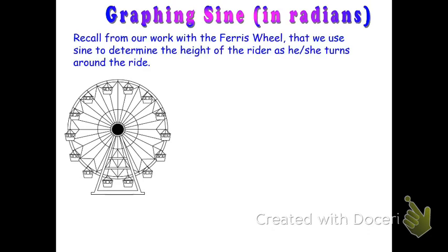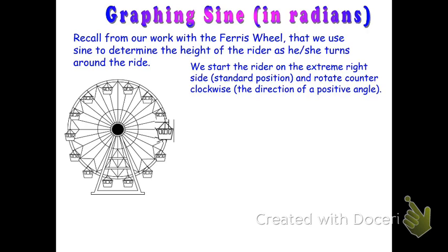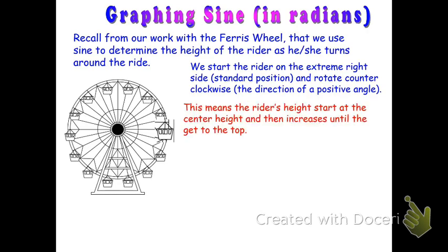Recall our work with the Ferris wheel — we always use sine to measure the height of the rider as he or she turns around the ride. If we start the rider on the extreme right-hand side position, this would be called the standard position, or the positive x-axis. They will then rotate in a counter-clockwise direction because that is a positive angle of revolution. If they start at the extreme right-hand side, their height would be the same as the center height of the Ferris wheel. We'll refer to that as center height.